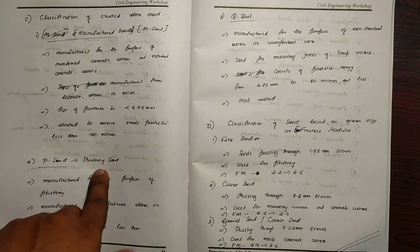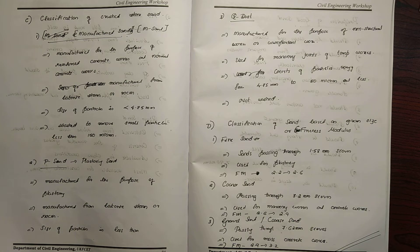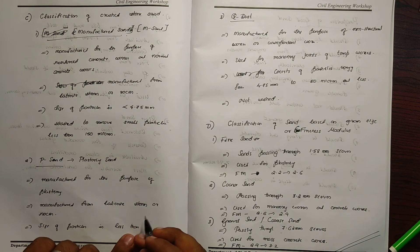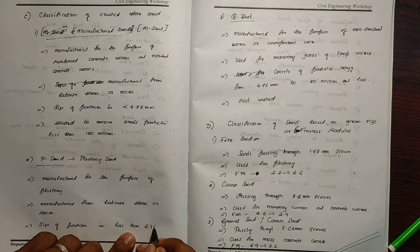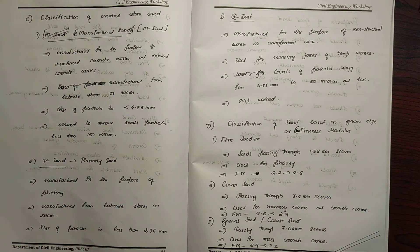P-sand is plastering sand. It is manufactured for the purpose of plastering, from lateral stones or rocks. The size of particles is less than 2.36mm. It is used for complete finishing work.